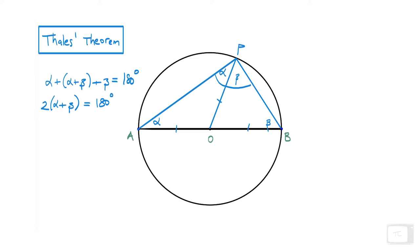We're going to divide both sides by two, so the right hand side is going to be 90 degrees. That concludes the proof. Alpha plus beta, so this angle here equals 90 degrees. Very nice.